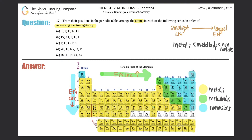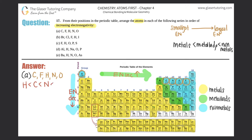For part (a), we compare carbon, fluorine, hydrogen, nitrogen, and oxygen. They're all in a line on the second period, so electronegativity increases left to right. Hydrogen is off to the side, so it has the smallest electronegativity. The ranking from lowest to highest is: H, C, N, O, F.